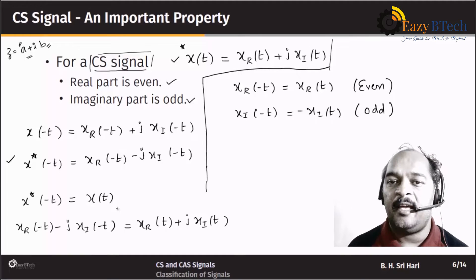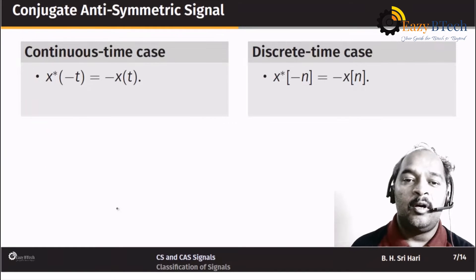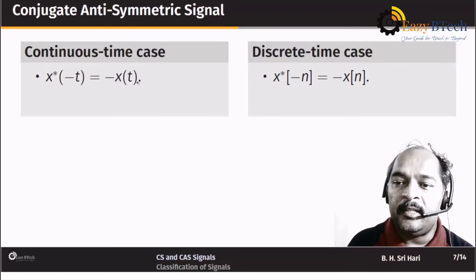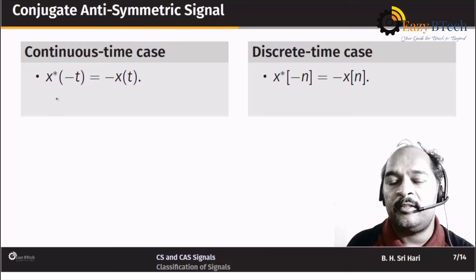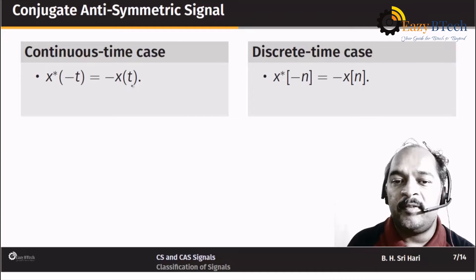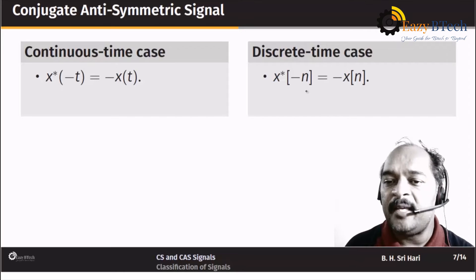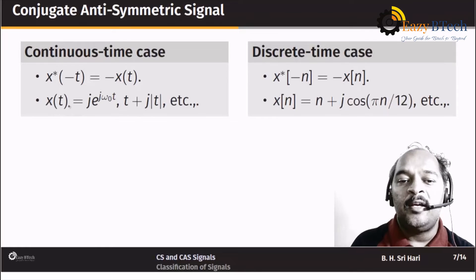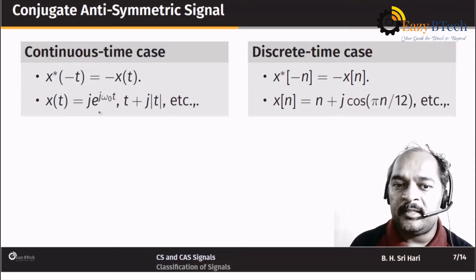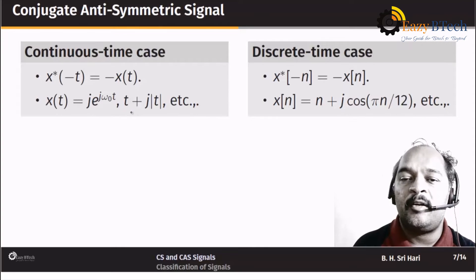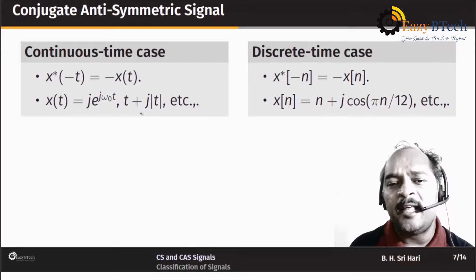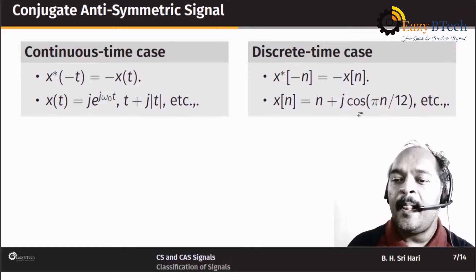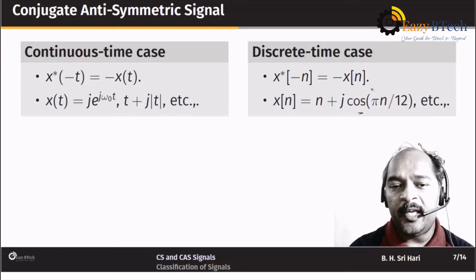A signal x of t is said to be conjugate anti-symmetric if it satisfies x-star of minus t equals minus x of t. For discrete time, the condition is x-star of minus n equals minus x of n. Examples include x of t equal to j times e to the power j omega-naught t, t plus j mod t, and so on. We can have infinite possible examples for both continuous and discrete time cases.